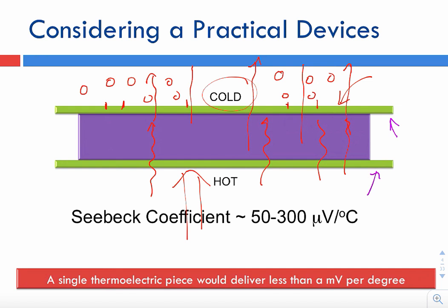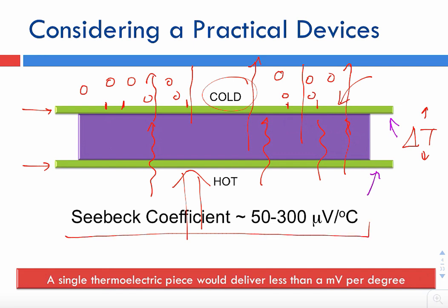We have a continuous flow of heat from the hot side to the cold side. Assuming that I can reject the heat from the cold side effectively such that this delta T is maintained — in other words, the device does not reach thermal equilibrium — then there will be a voltage difference between the top plate and the bottom plate. For typical semiconductors, the Seebeck coefficient is in the 50 to 300 microvolt per degree Celsius range, though microvolt per Kelvin is more commonly used. So this single piece of semiconductor is going to generate this much voltage.